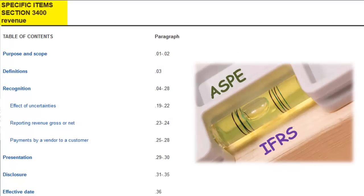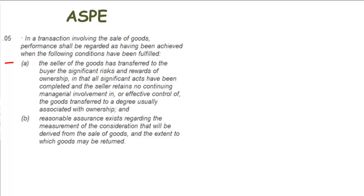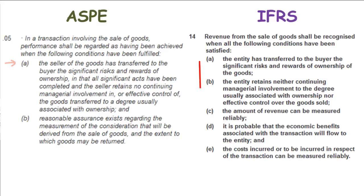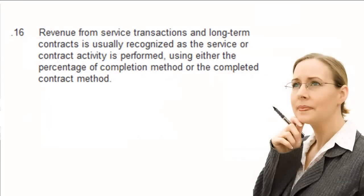Let's skip over to ASPE for a moment. In principle, this section aligns with the international standards, but there are always nuances you need to be familiar with. Note that once again we have specific criteria to apply to the sale of goods, but the criteria are different than they were under IFRS. That doesn't necessarily mean a different outcome, but it absolutely means a different analysis — look it up and make sure your analysis uses the right criteria. Also note that ASPE doesn't have a separate section for construction contracts. It references the percentage completion method but also permits the use of the completed contract method, which is not in international standards.